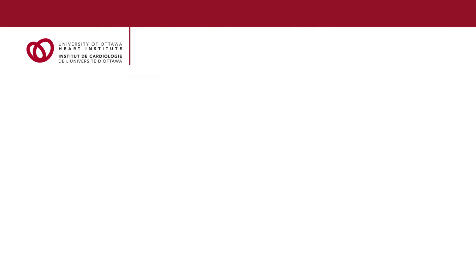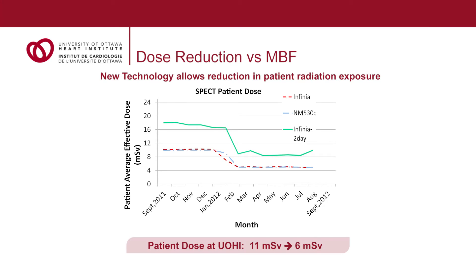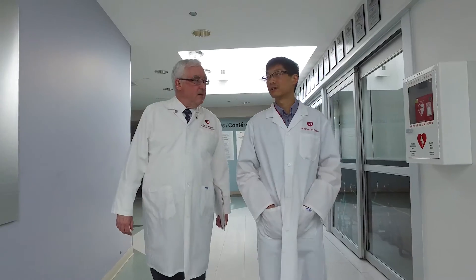Radiation dose is an important consideration with any test that uses radiation. Philosophically, you want to have the lowest radiation dose possible. For this study, we chose to use the radiation dose widely used across North America, which is approximately 10 millisieverts. Having chosen that radiation dose, we were then able to determine the doses we would use for injection at rest and stress.